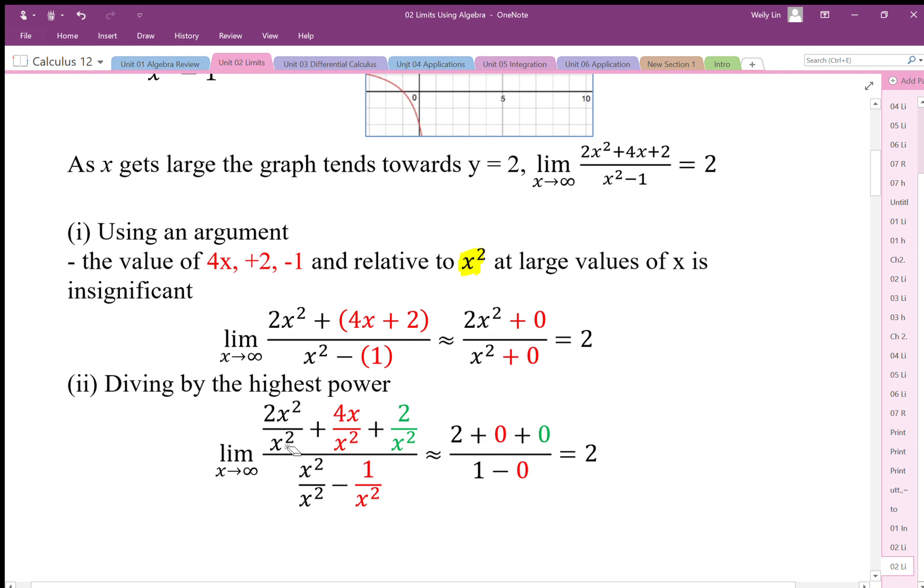Then we end up with 2x²/x² which is 1, and as x goes to infinity this ratio tends towards 2. So we can do this algebraically in this way and get the same result.